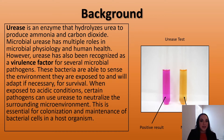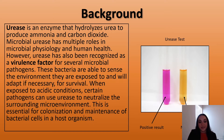A little bit of background about urease: this is an enzyme that hydrolyzes urea to produce ammonia and carbon dioxide. Microbial urease has multiple roles in microbial physiology and human health. However, it has been known to be a virulence factor for several different pathogens. These pathogens are able to sense the environment they're exposed to, and if they need to, they can upregulate this enzyme and neutralize their surrounding microenvironment to survive. This is essential for colonization and maintenance of bacterial cells in host organisms. On the right, I provided a picture of a urease test — when ammonia is produced, it raises the pH and causes a pink positive result.